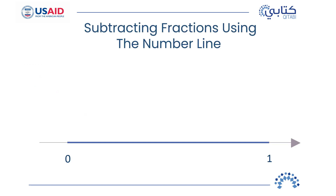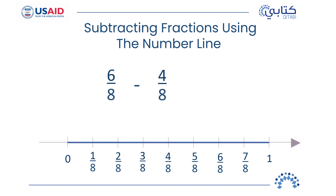Just as we used the number line to add fractions, we can also use it to subtract fractions. Look at the number line — the one whole is divided into eight equal parts, so each part is one-eighth. To subtract six-eighths minus four-eighths, go to the six-eighths mark, then jump four jumps backwards. Where are you now? At two-eighths! Six-eighths minus four-eighths equals two-eighths.